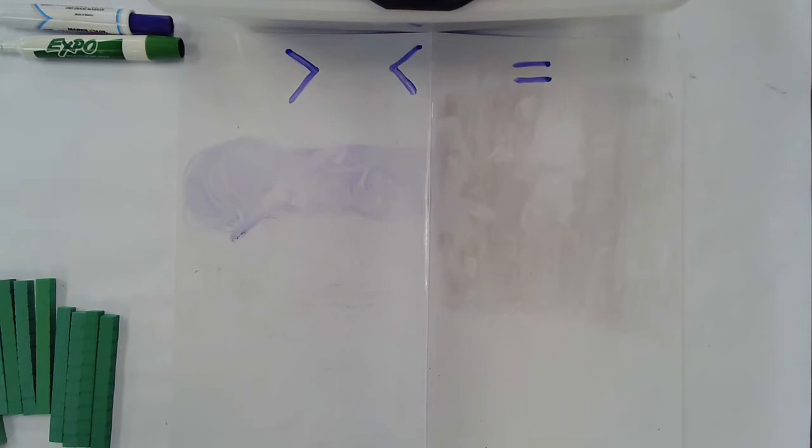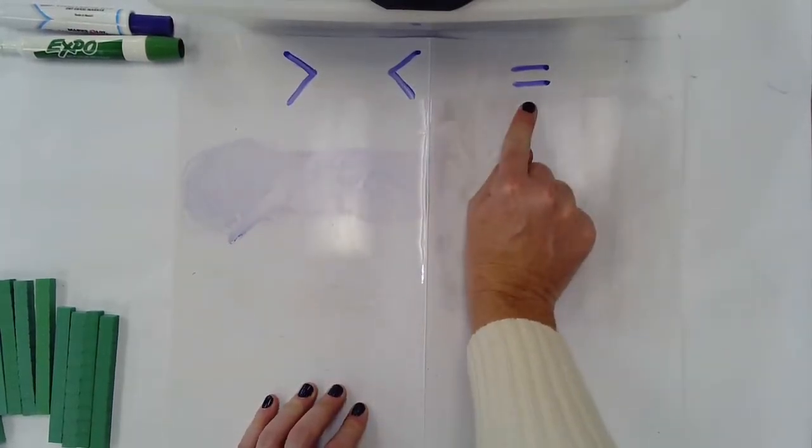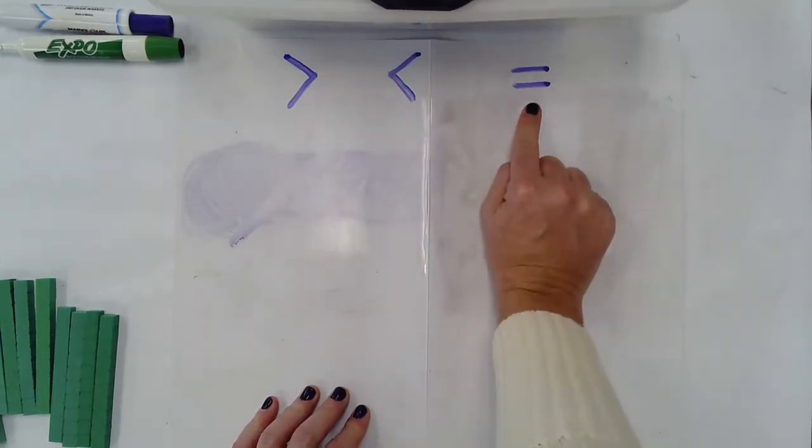When we decide which one is greater, which one is bigger, when we decide which one is less than or smaller, we're going to be using comparison symbols. So this symbol right here is greater than, less than, and this one you're probably familiar with which is equals to.